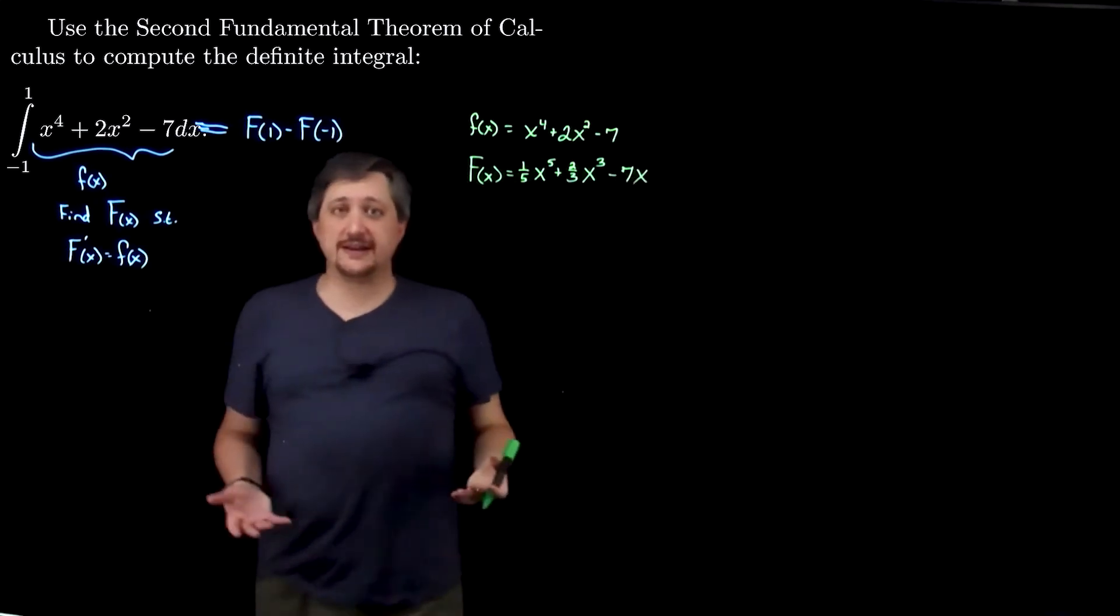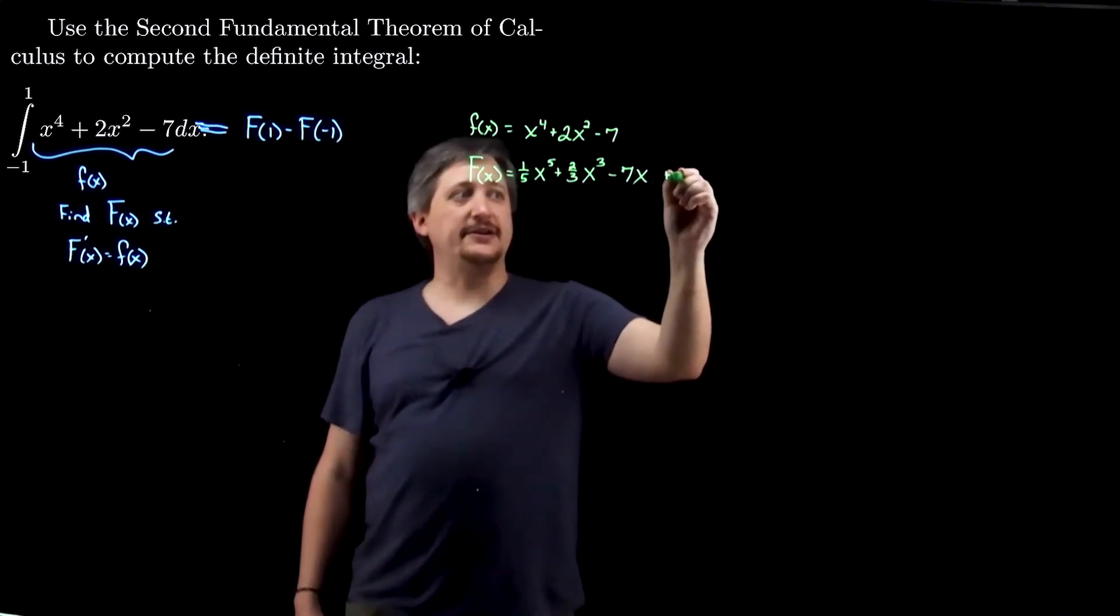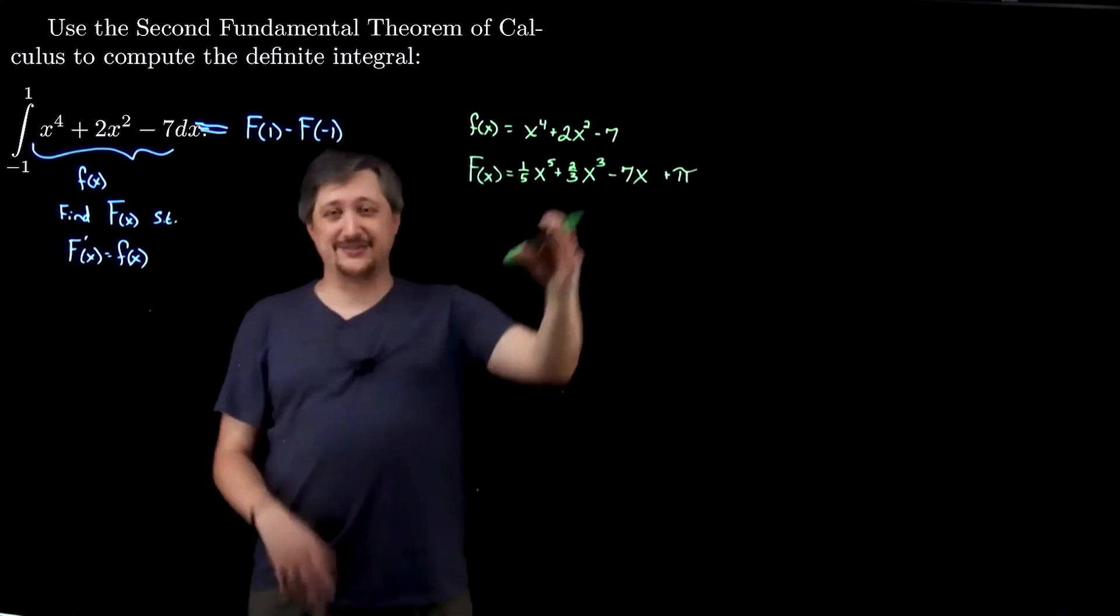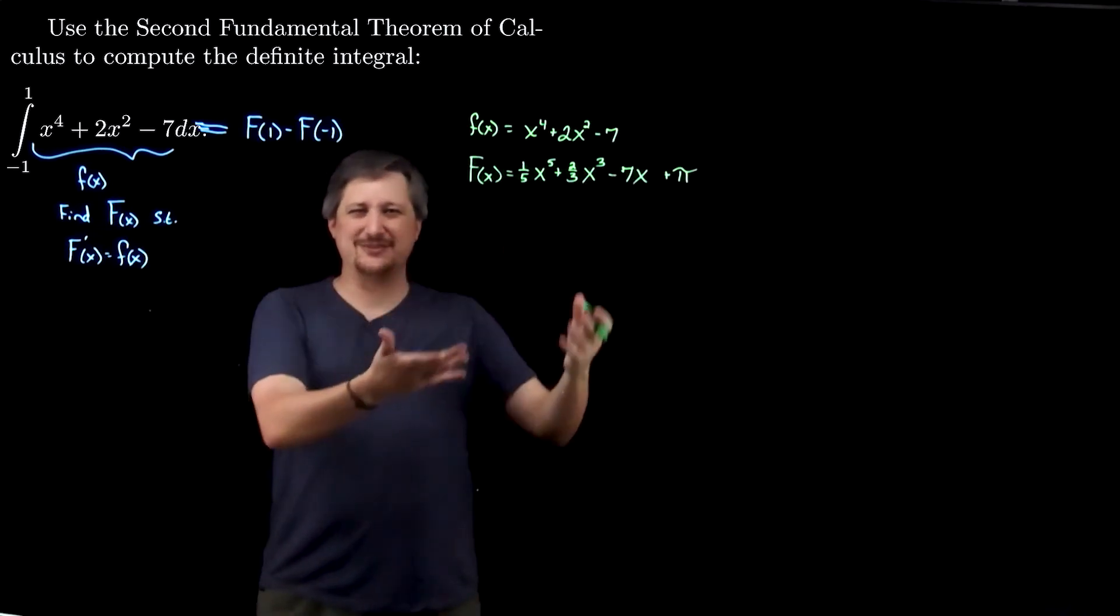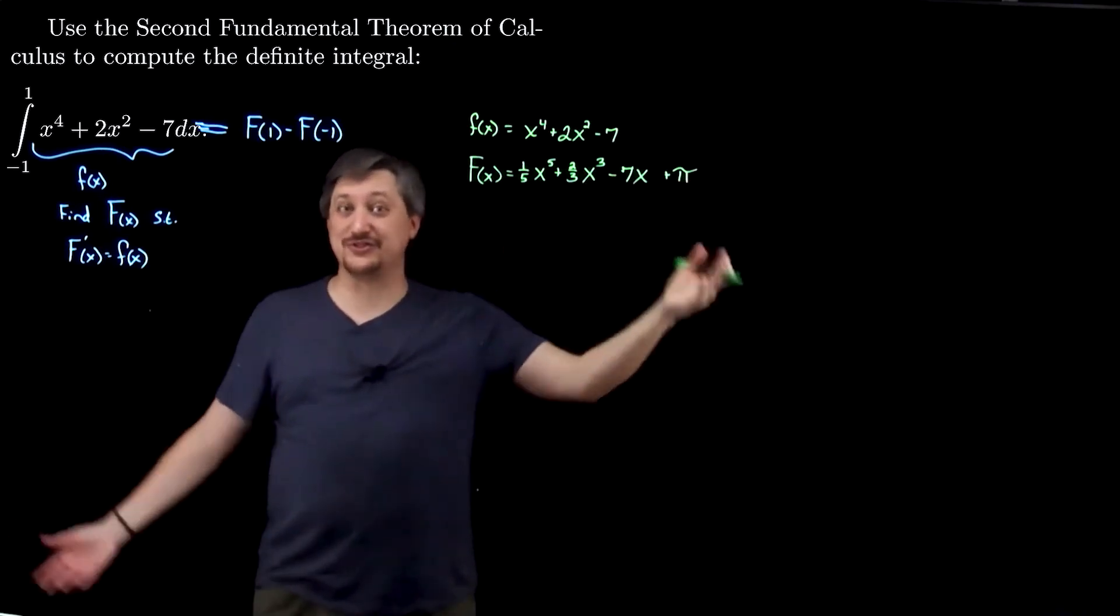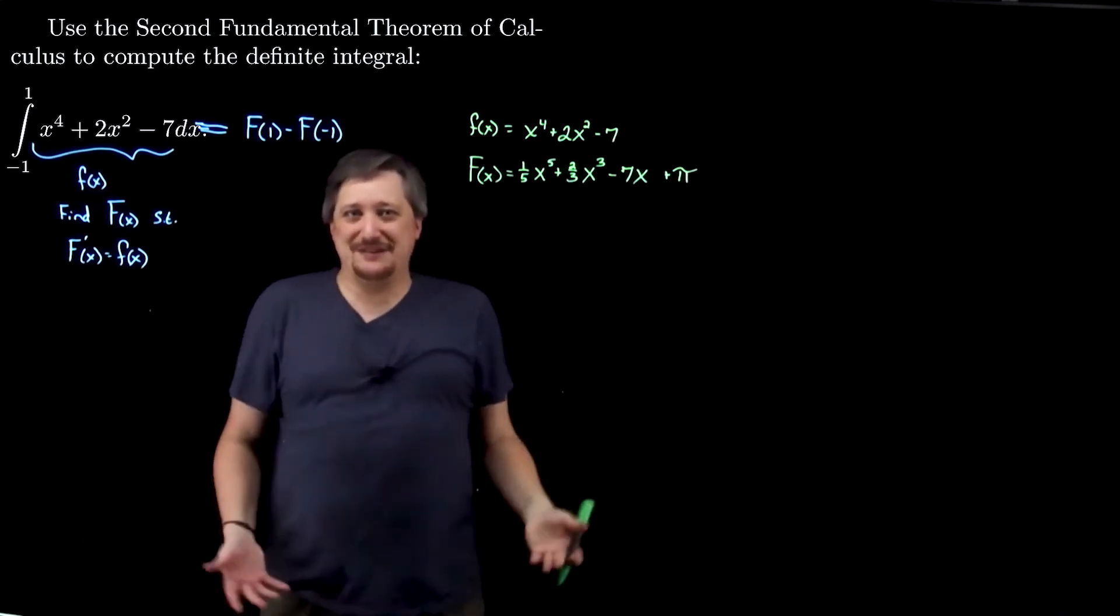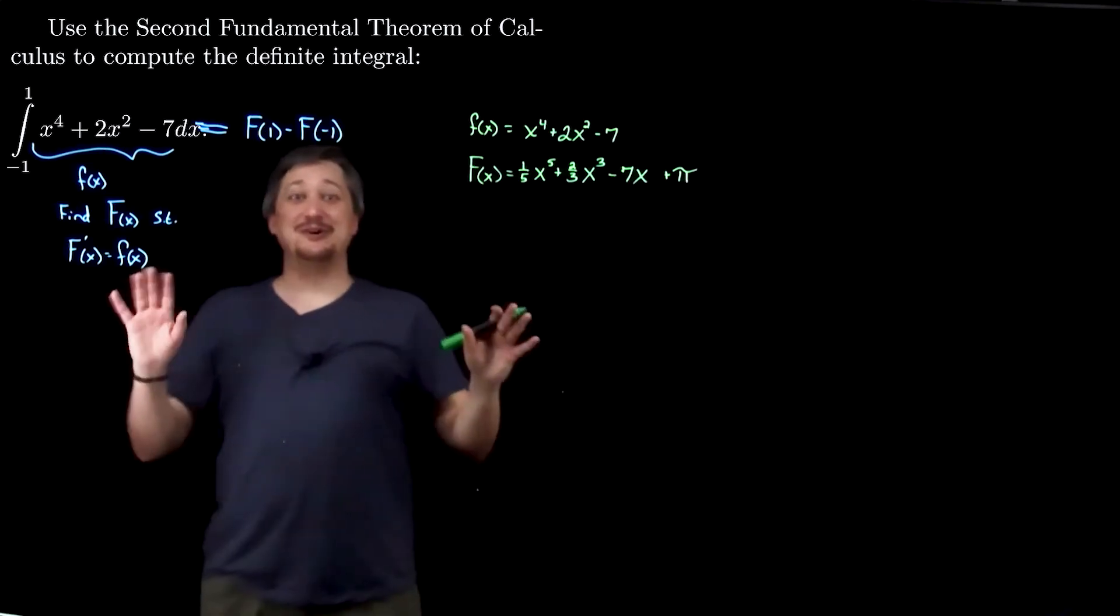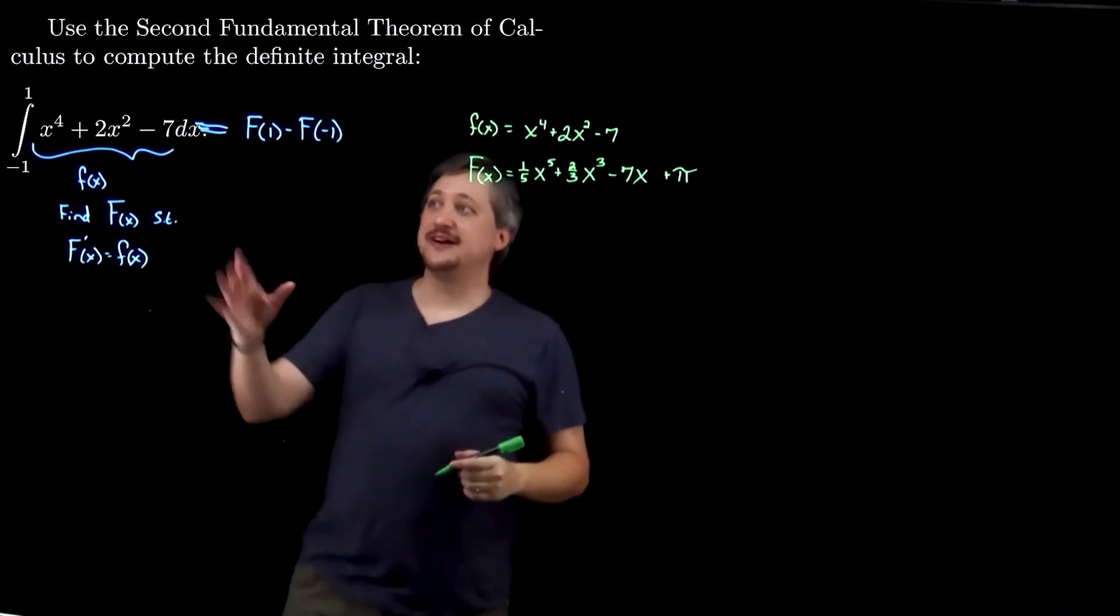And again, we could choose any antiderivative we want. This is one of them, but we could add pi on here if we wanted. No one would ever really do that. Like, this is crazy talk. I'm going mad. But I just want to actually solidify the idea that it doesn't matter which one. So, I'm going to throw a pi on there just to show that it doesn't matter. Don't do that in your work. You're just going to give yourself more work and maybe make a mistake. Nonetheless,